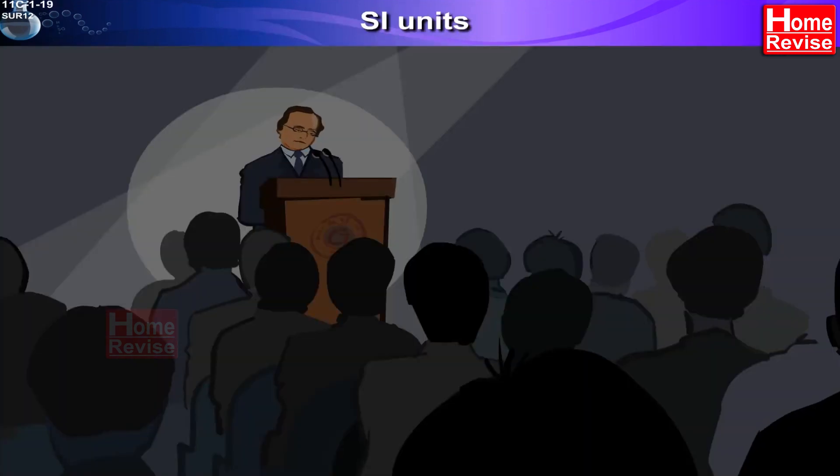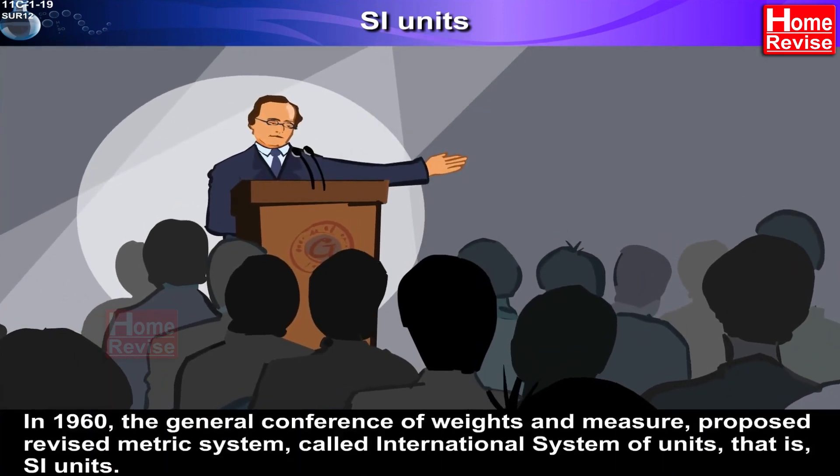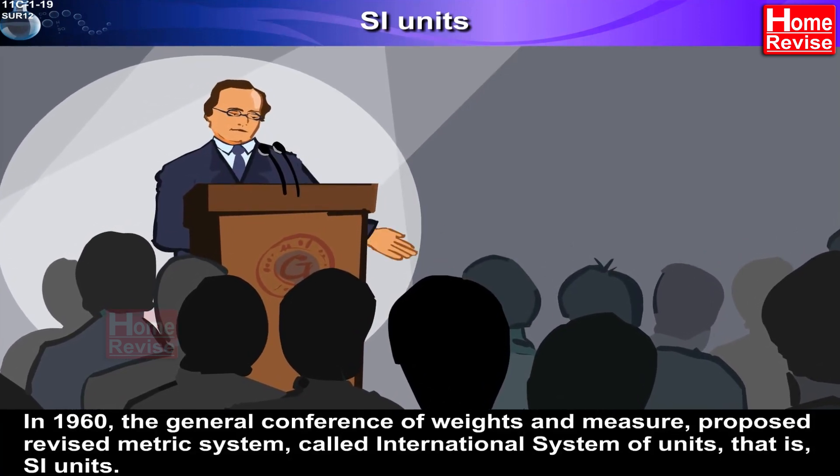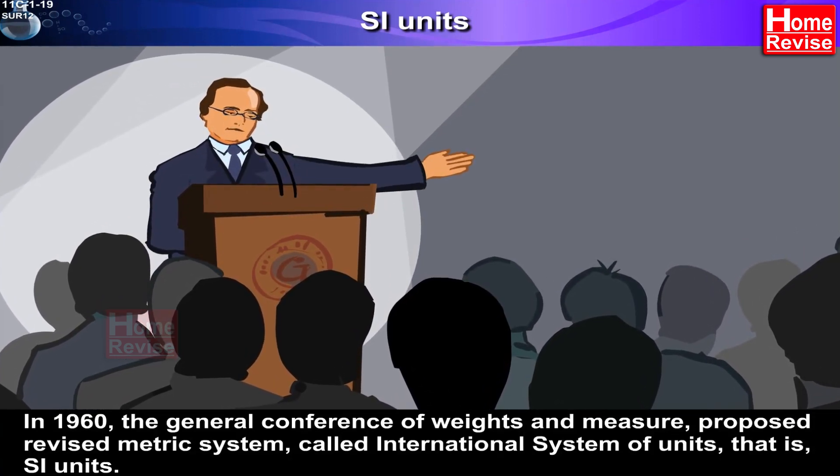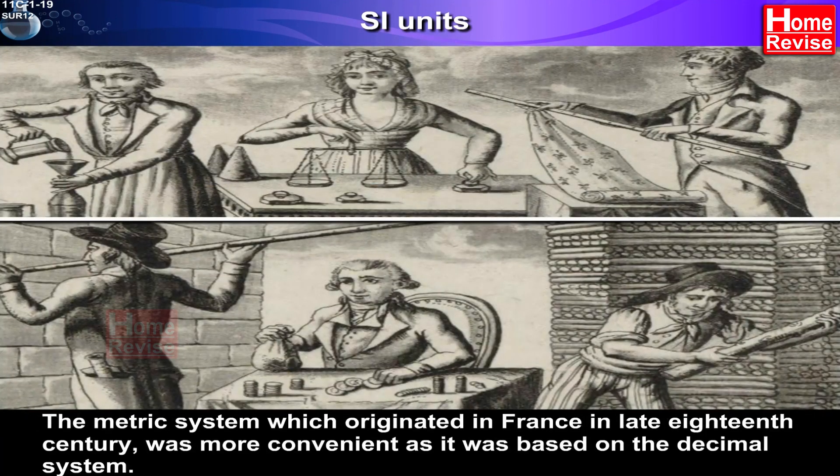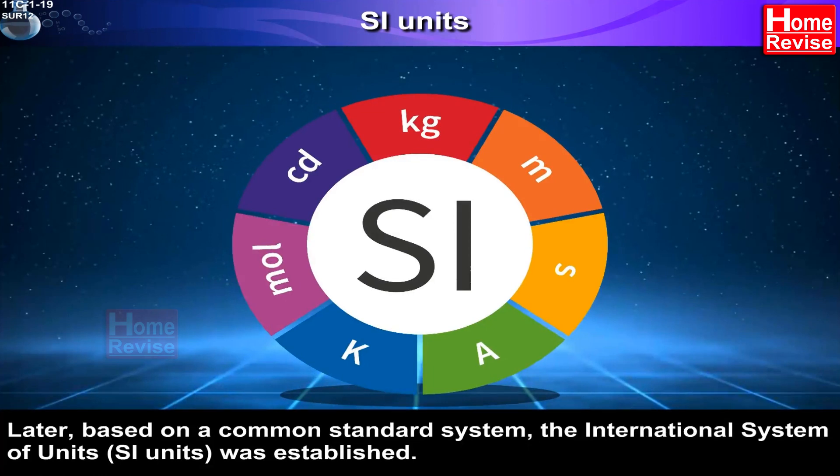SI Units. In 1960, the General Conference of Weights and Measures proposed revised metric system called International System of Units, i.e. SI Units. The metric system which originated in France in late 18th century was more convenient as it was based on the decimal system. Later, based on a common standard system, the International System of Units, SI Units, was established.